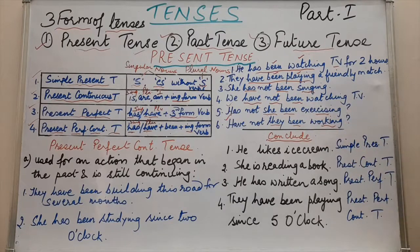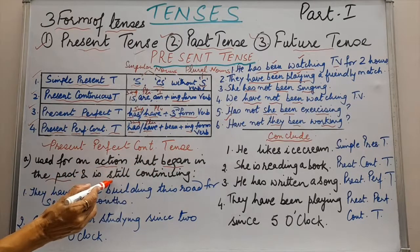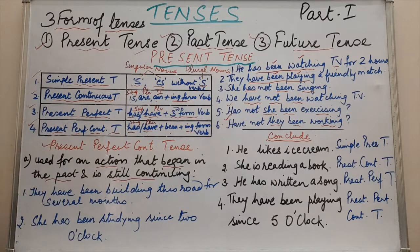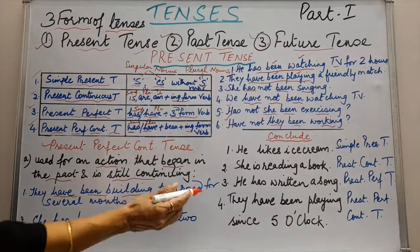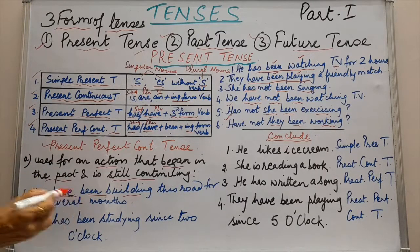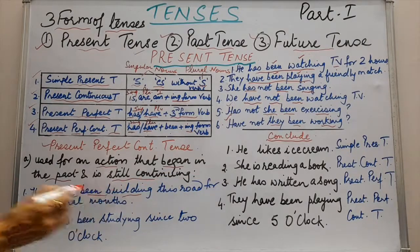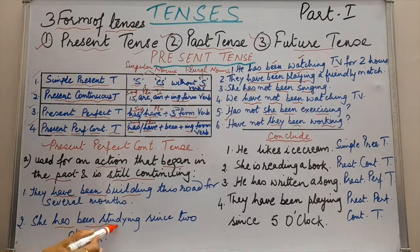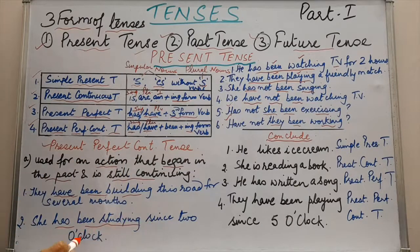Now let us see the situation in which we use present perfect continuous tense. It is used for an action that began in the past and is still continuing. Example: they have been building this road for several months — for several months they have been building, so we use have plus been plus building. She has been studying since 2 o'clock — she is studying since 2 o'clock and till now she is still studying, so present perfect continuous tense is used.